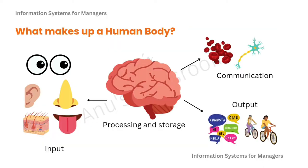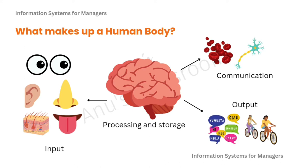First of all, what makes up our human body? We have our five senses — eyes, nose, ears, mouth — which act as input. You see with your eyes, feel with your skin, hear with your ears, smell with your nose, and taste with your tongue. The tongue can also act as both input and output because you can speak with it. All this input goes to our brain, which is the processing and storage unit.